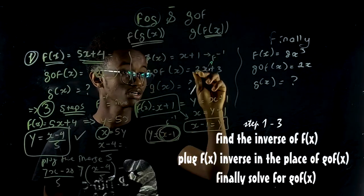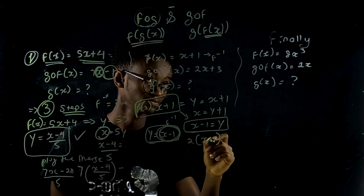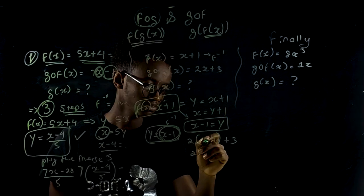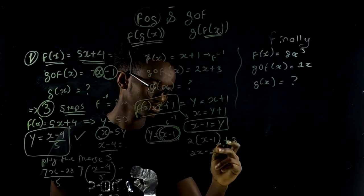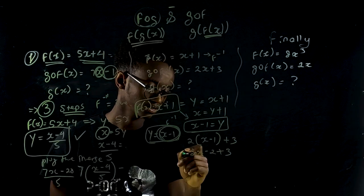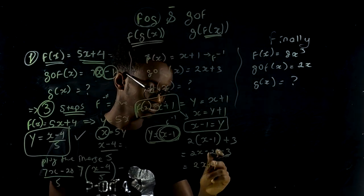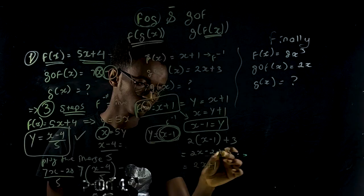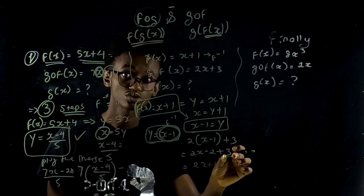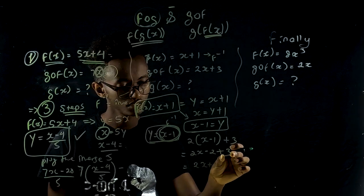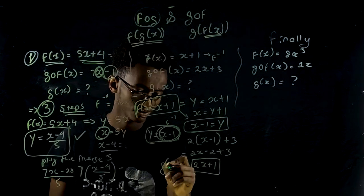Now plug in the inverse: 2 times (x minus 1) plus 3. That gives 2x minus 2 plus 3, which equals positive 1. So 2x minus 2 plus 3 is 2x plus 1. Therefore g of f of x equals 2x plus 1.